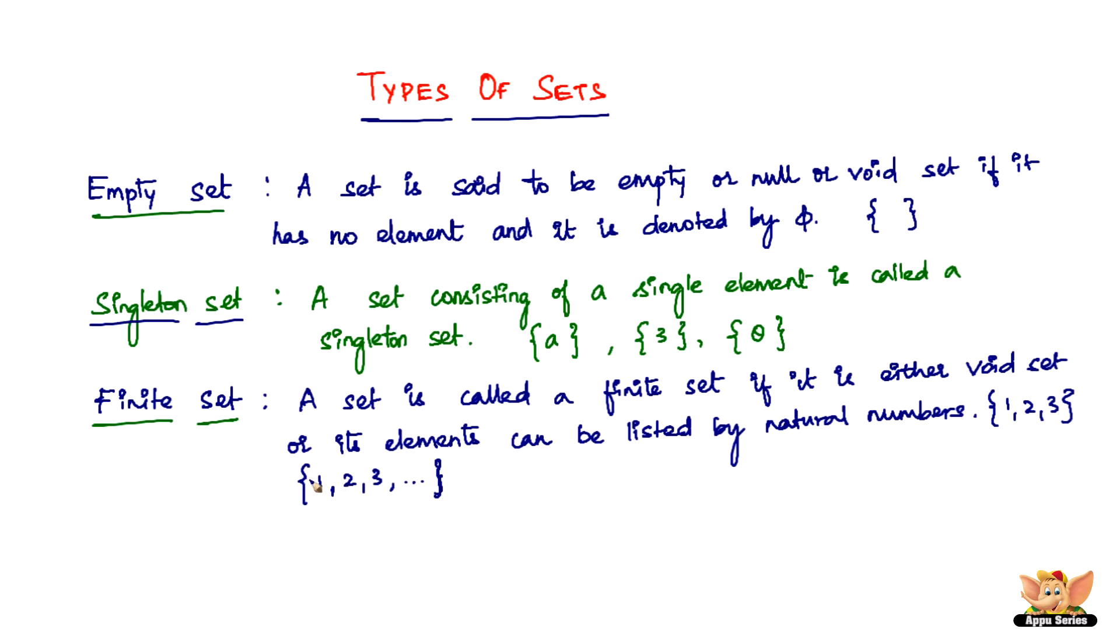So an infinite set, an example can be just a set of natural numbers: 1, 2, 3, dot dot dot, just keeps going on and on and on. It's not finite. So that is called as an infinite set.